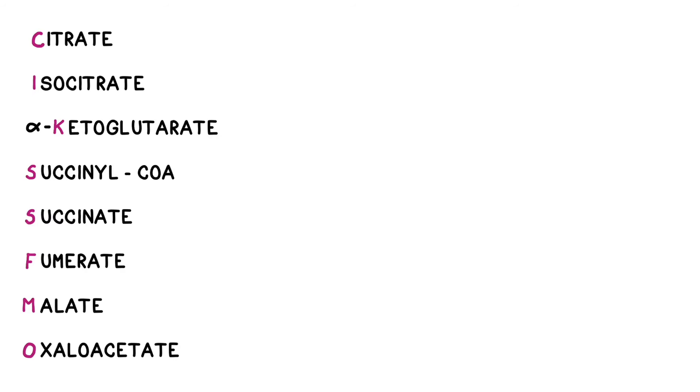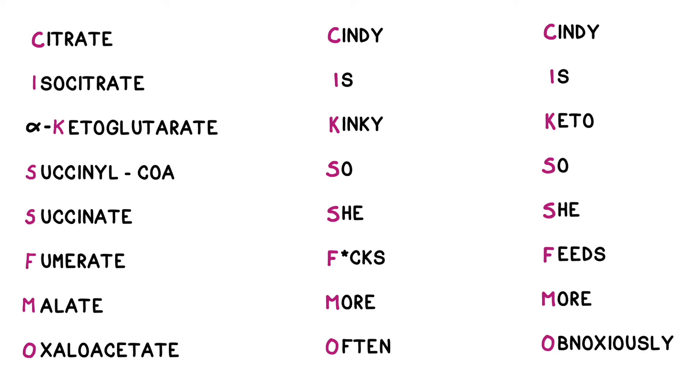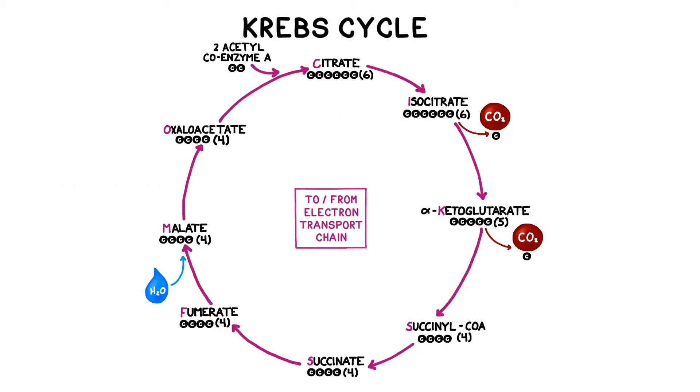I'm not usually a big fan of memorization. But if you're forced to memorize the Krebs cycle, here's a little trick that I learned in undergrad. Cindy is kinky, so she f**** more often. However, if you need something a little more G-rated, you might go with Cindy is keto, so she feeds more obnoxiously. So now we've mapped out how the Krebs cycle cycles carbon, and where the carbon dioxide waste product comes from.